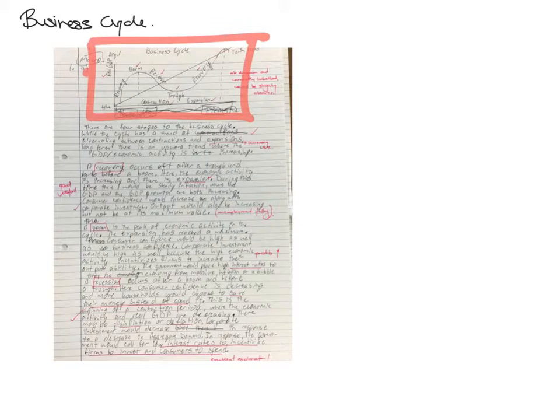So once you mention the diagram, then you all step through trying to explain things. So this student was the same, so a recovery occurs after the trough and before a boom. Essentially, you're going through and explaining the different economic indicators.